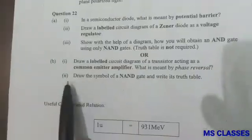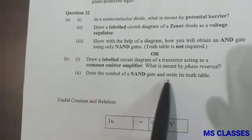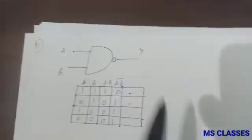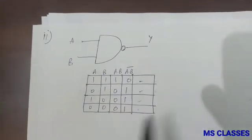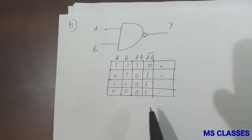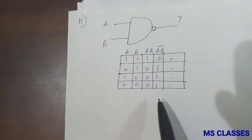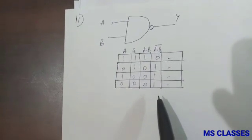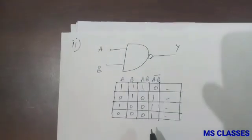Second part: Draw the symbol of NAND gate and write its truth table. So this is the required symbol and the truth table. So I hope all the questions of Section C and D are clear to you all. In case if you still have any doubt, please comment in my comment section. Thank you.